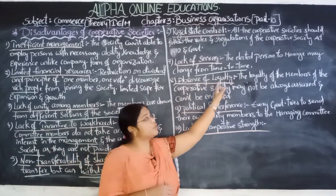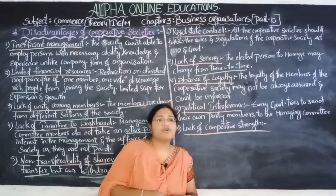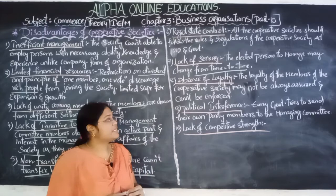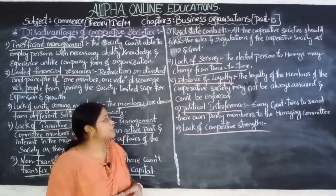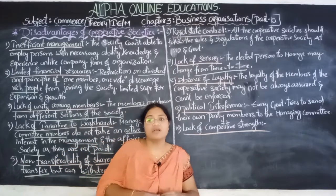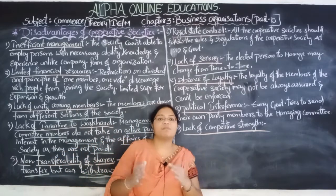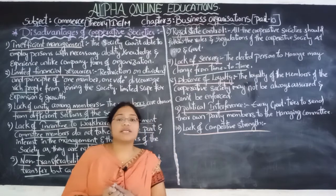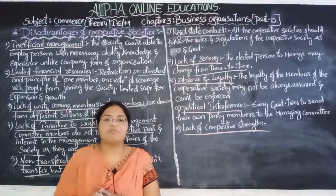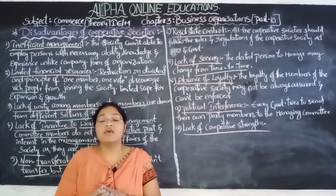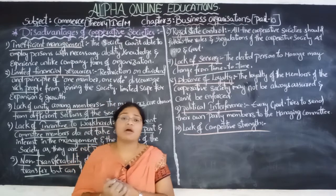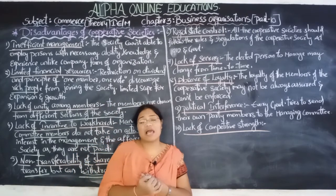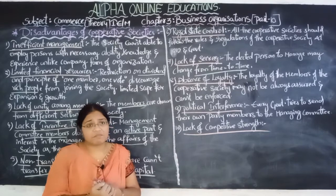The next disadvantage is absence of loyalty. The loyalty of members of the cooperative society is also absent. The loyalty of members may not always be assured — there is no hundred percent assurance of the loyalty of cooperative society members. It may or may not be there, and no guarantee can be given.